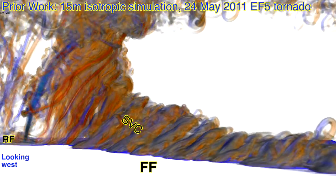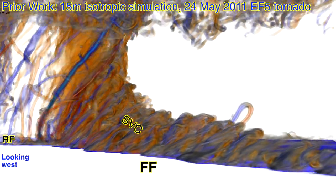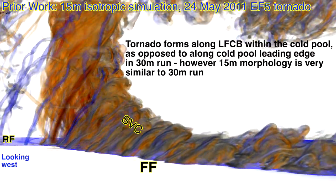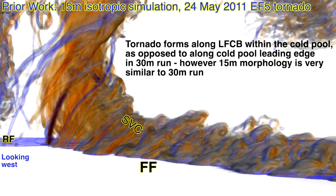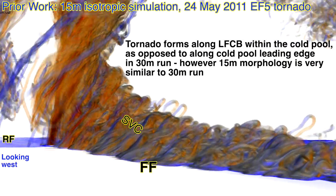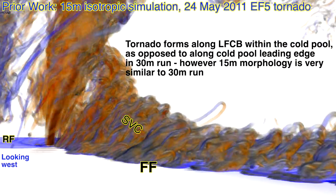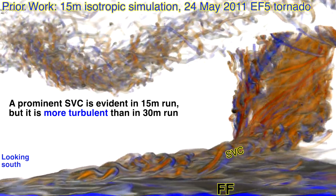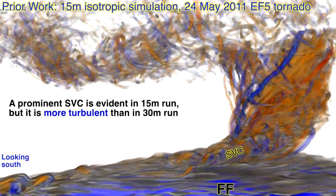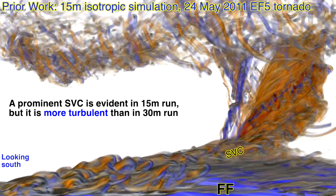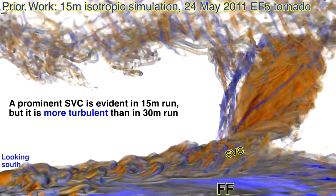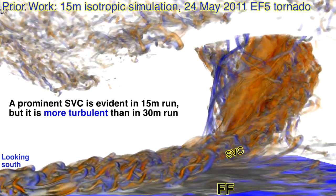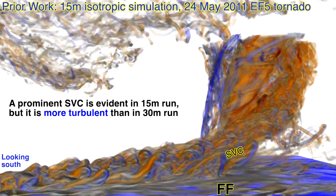As we go to higher resolution — this is also prior work, a 15-meter simulation — you see the same sort of parade of vortices turning into a tornado. The tornado seems to form further back into the cold pool in these higher-resolution simulations, and that may be significant. The SVC is much more turbulent. I get a little nervous when I look at my 30-meter data and get the impression the SVC might be this nice laminar thing — well, it may be more turbulent in reality.